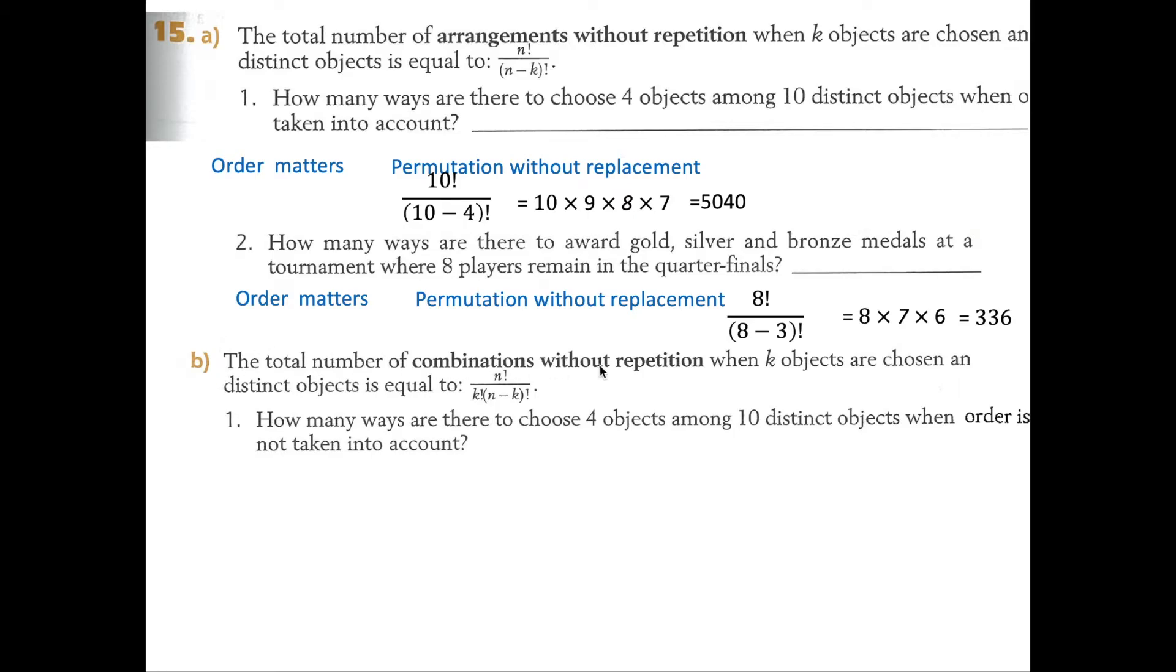Part B. The total number of combinations without repetition when k objects are chosen and n distinct objects is equal to n factorial divided by k factorial times n minus k factorial.